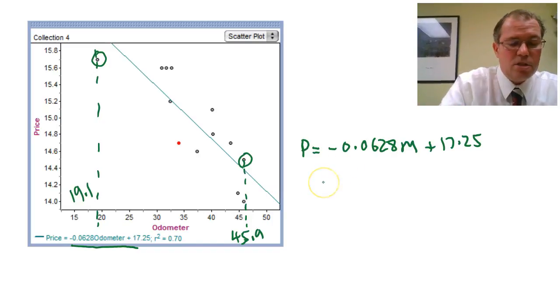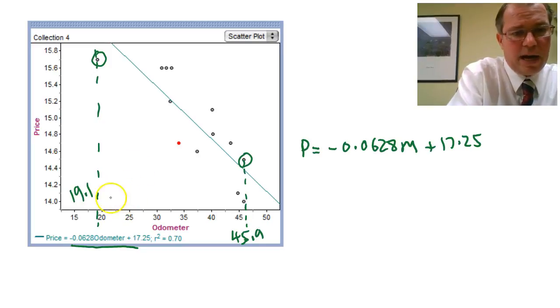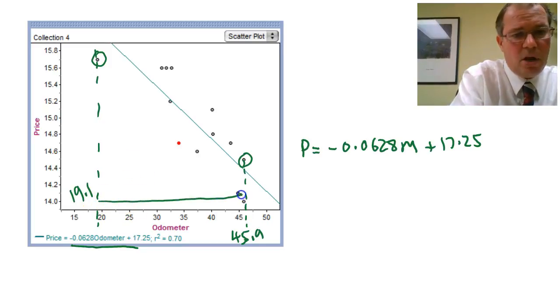For instance, there's nothing to say that we thought it was linear here. And maybe here it goes back up again. We don't know. So we must not predict. So we're only allowed to predict inside the range for our odometer reading. And that's called interpolation. So predicting inside.